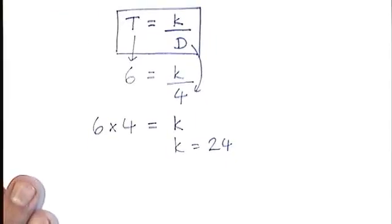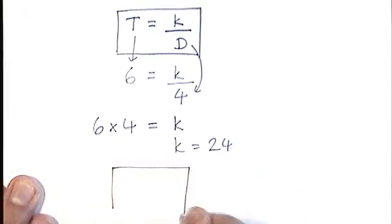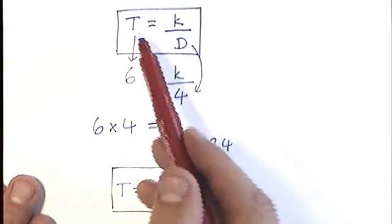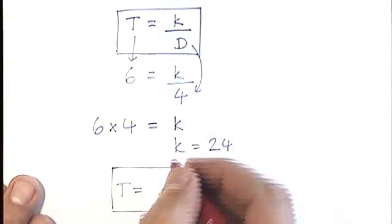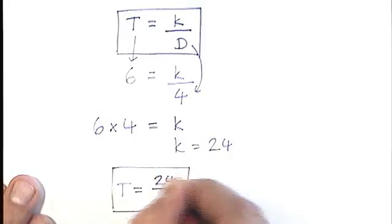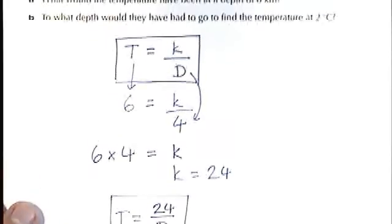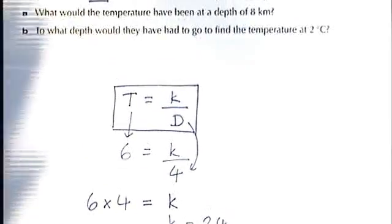So the final step before I can start part A is to actually write my formula out using that value of K. So I'm copying the top box here. T equals the value of K, I'm going to replace, and a D on the bottom there. So now I've got my formula, I can go ahead and answer parts A and B.